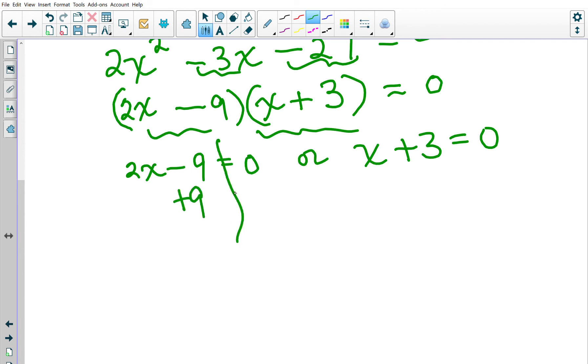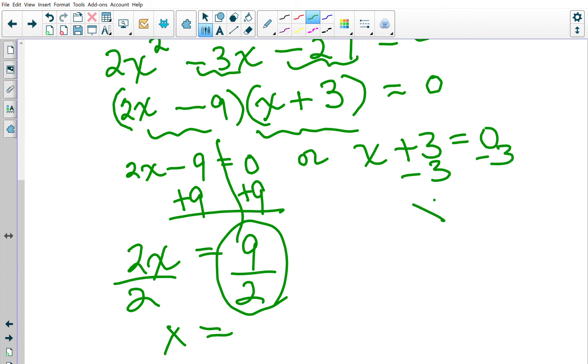I add 9 to both sides of this equation, so 2X equals 9, and X equals 9 halves. When I subtract 3 from both sides, X equals negative 3. Now I have to throw that out because the length of a side can't be a negative number.